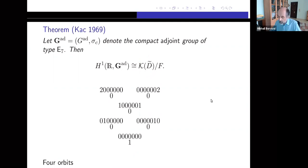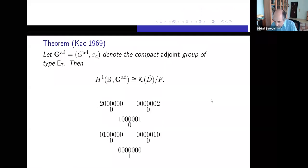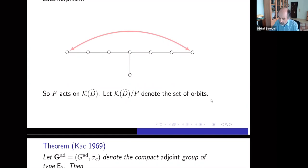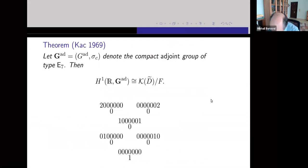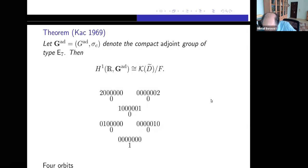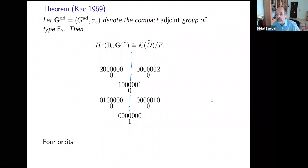First theorem (Katz, 1969): consider the adjoint compact group of type E7 with involution sigma_c. Then its Galois cohomology is in canonical bijection with the set of orbits of F (the fundamental group of order two) acting on the set of Katz labelings. Computing the orbits: the group acts by reflection with respect to the vertical symmetry axis. We see there are four orbits, so the Galois cohomology of the adjoint group of type E7 has cardinality 4.